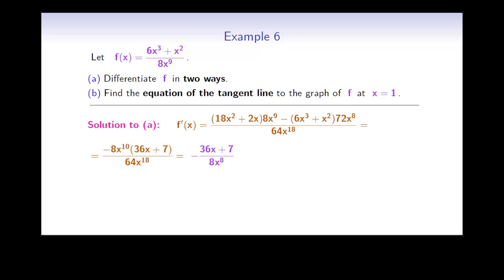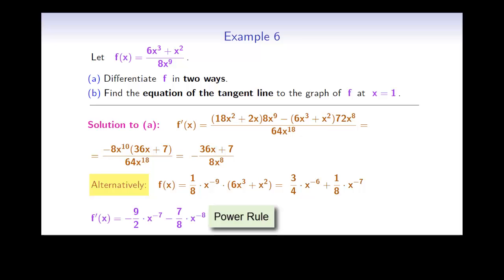But there is another way. We can first simplify the function and write it as 1/8 times x to the negative 9, multiplying 6x cubed plus x squared, and expand to get 3/4 x to the negative 6 plus 1/8 times x to the negative 7. Now we don't need the quotient rule to differentiate. Using mainly the power rule, we get f prime of x equal to negative 9/2 times x to the negative 7, minus 7/8 times x to the negative 8. Using simple algebra, we can easily see that we obtain the same expression: negative 36x plus 7 divided by 8x to the 8.